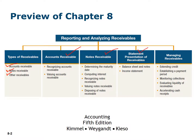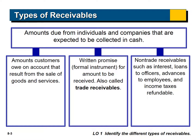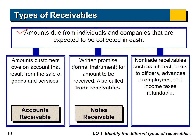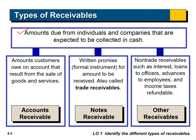We'll also cover how to present receivables on the balance sheet and how to manage them. Receivables like accounts receivable are amounts due from individuals and companies that are expected to be collected in cash. For example, when you sell something on account, customers will pay you in the future — that's an accounts receivable. A written formal instrument for an amount to be received is called a note receivable. Non-trade receivables such as interest, loans to officers, and advances are called other receivables.